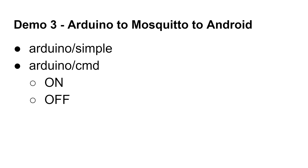And if I press the button on the Arduino, it will send something on 'arduino/simple' so that the message appears for subscribers to 'simple.' Let's go ahead and do that.